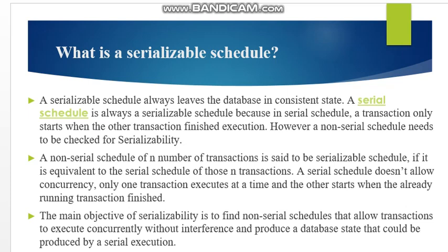We already know that when we have a type of schedule, there is a serial schedule and a non-serial schedule. If you consider serial schedule, it is always serializable. But when we consider non-serial schedule, we need to check for serializability. A non-serial schedule of n number of transactions is said to be a serializable schedule if it is equivalent to the serial schedule of those n transactions. If a non-serial schedule is producing the result same as a serial schedule, we say that that non-serial schedule is serializable.